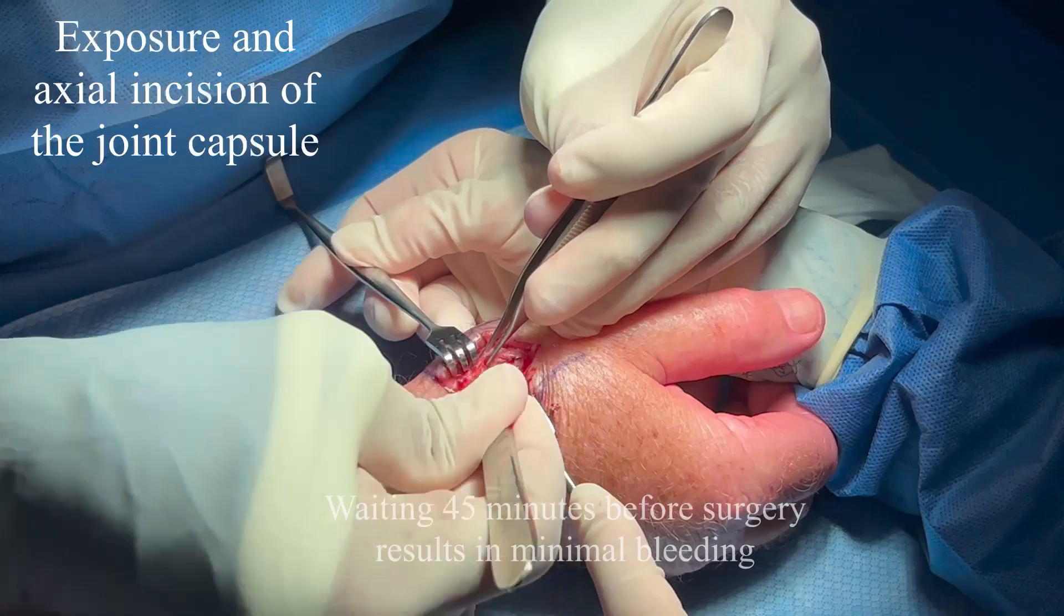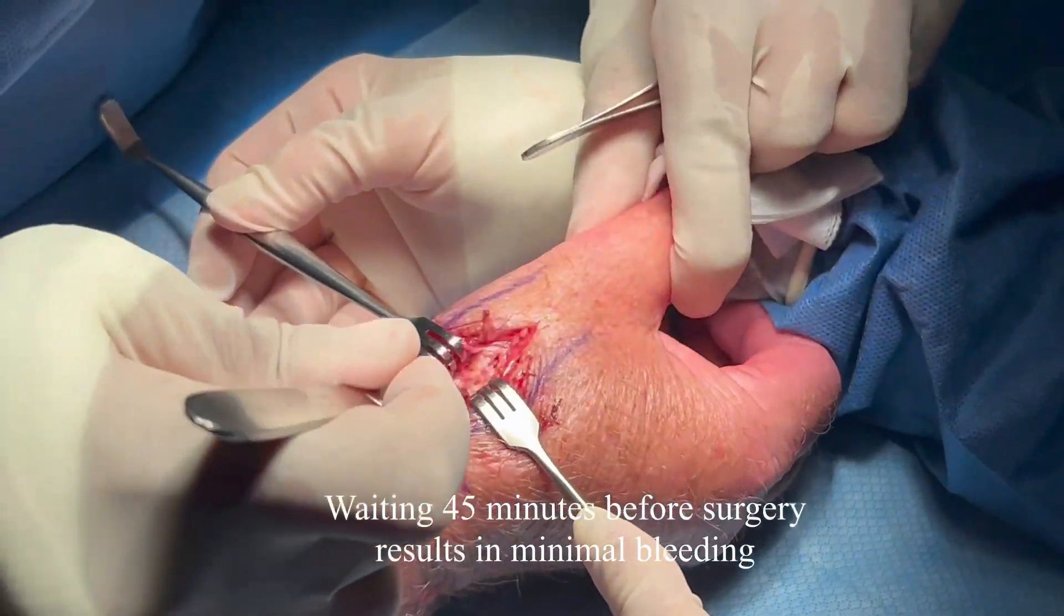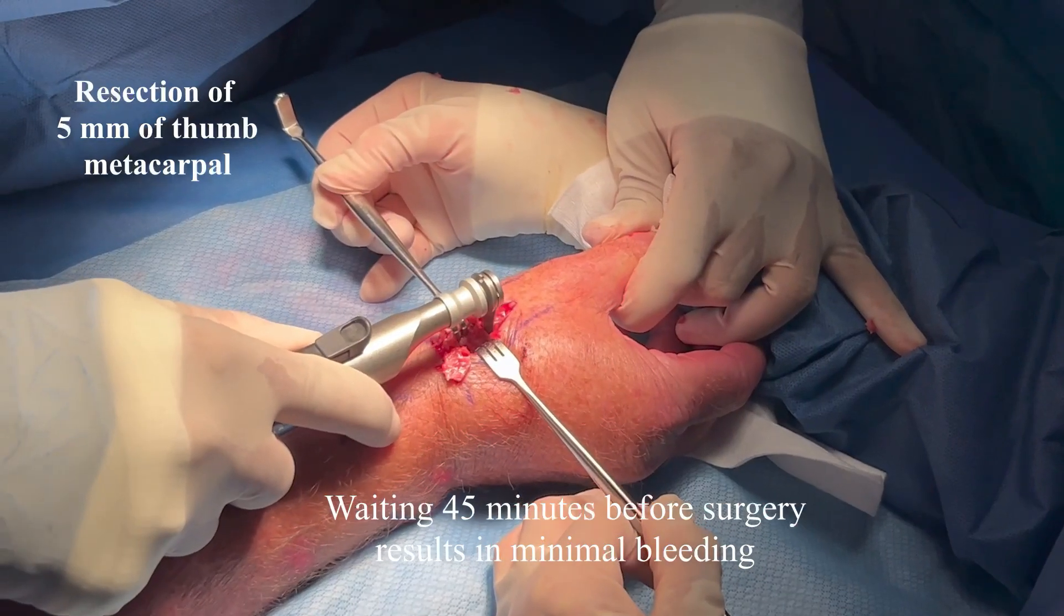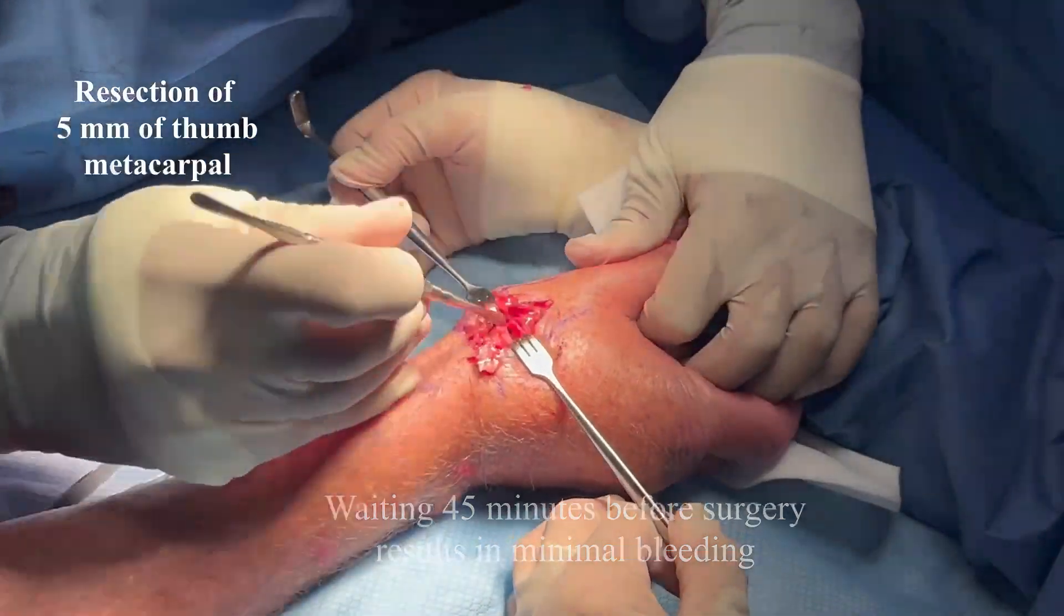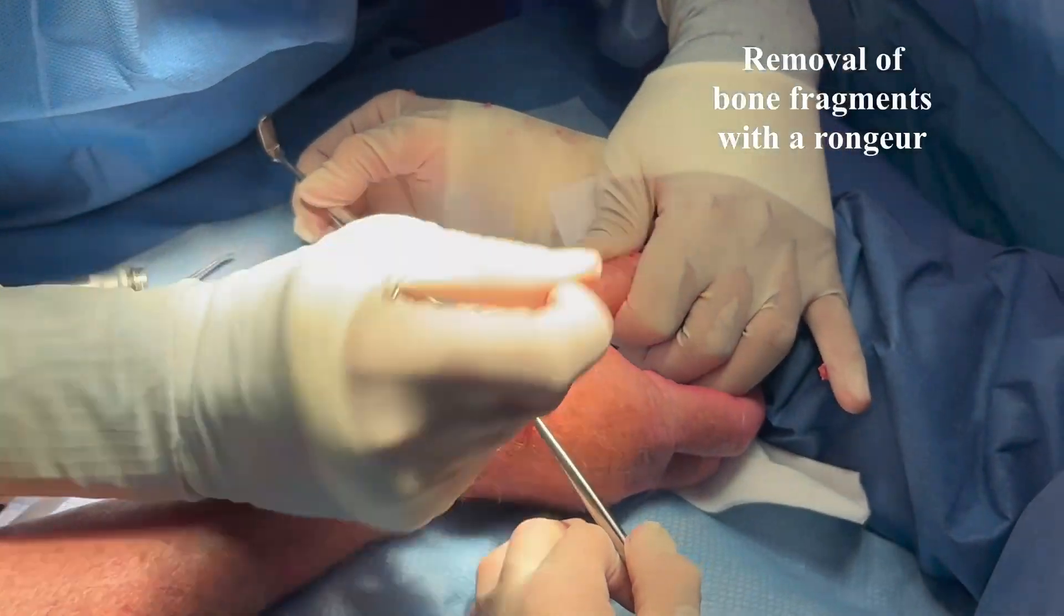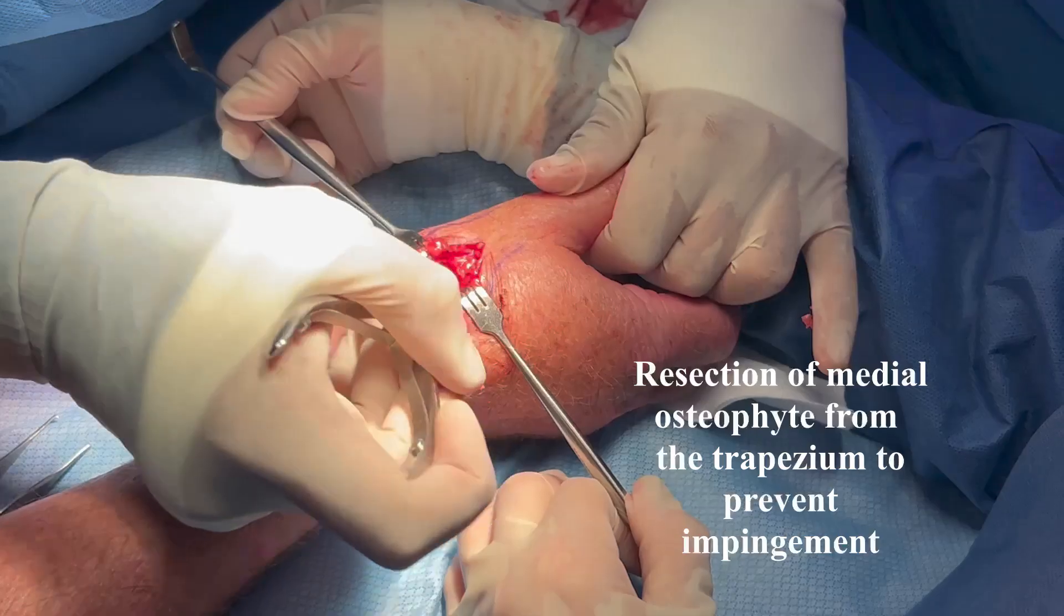The soft tissues are elevated and the joint is exposed. Five millimeters of metacarpal bone are resected with a saw. Bone fragments are removed with a rongeur.